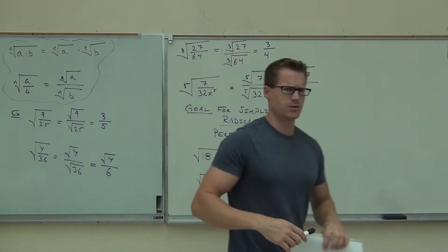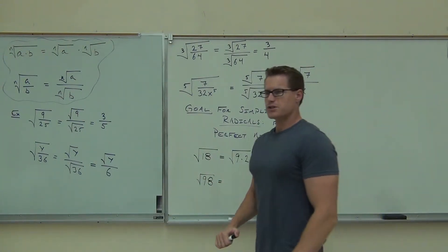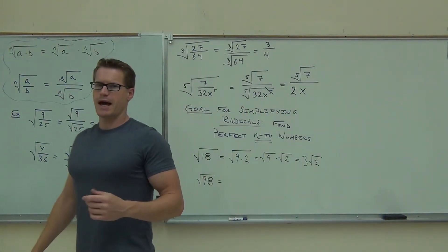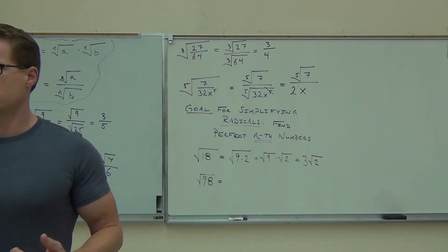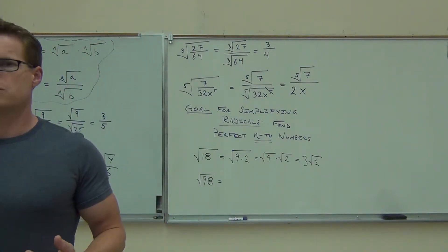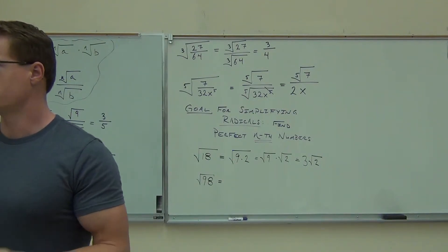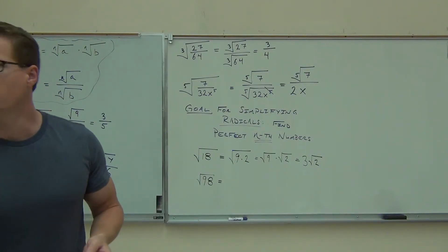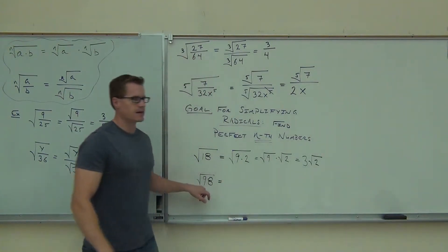Think on it — don't say it out loud right now. First thing you've got to do is think about the type of root we have. What type of root do we have? Square root. So you're looking for a perfect square number that divides 98. Think on a number that divides 98.